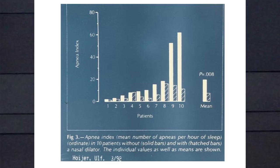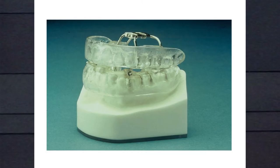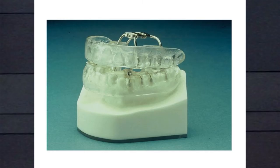Here's something you can do for yourself — the Breathe Right. You've probably seen it on football players. It's an elastic Band-Aid with a plastic leaf spring. You put it on the nose after cleaning with alcohol or soap and water. It lifts the ala of the nose up and improves nasal airflow. Nasal airflow is key to preventing obstruction downstream in the pharynx. In a small study from Scandinavia, using an external nasal dilator made a big difference. I wear one every night and it improves my sleep — you can get them at Costco.